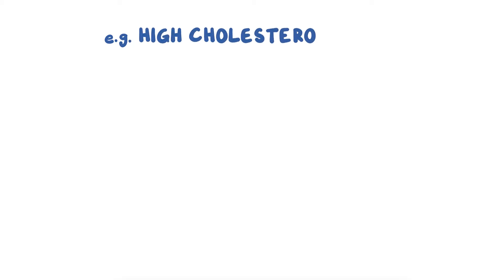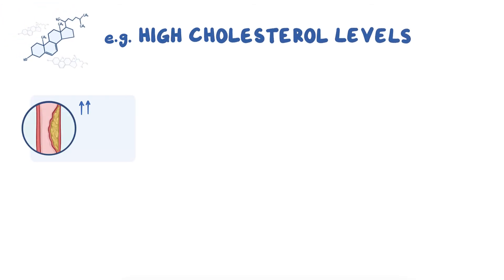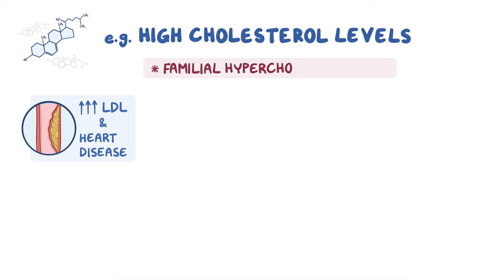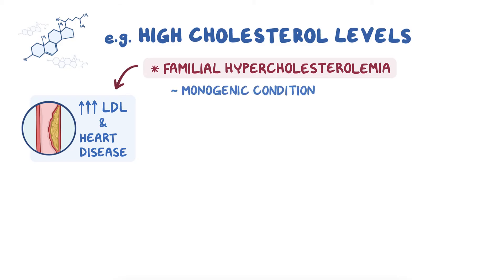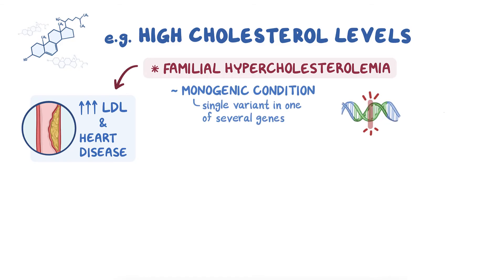Let's take a closer look at monogenic and polygenic causes using high cholesterol levels as an example. One cause of high levels of low-density lipoprotein, or LDL, and subsequent heart disease is called familial hypercholesterolemia. It's a monogenic condition because it's caused by single variants in one of several genes and is usually inherited in families in an autosomal dominant pattern.